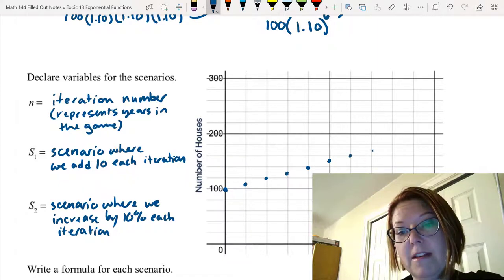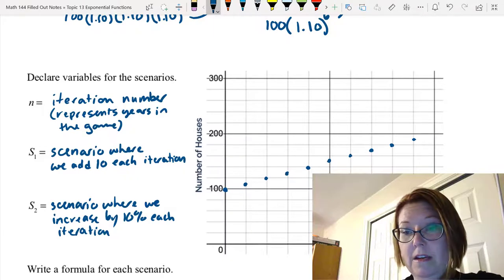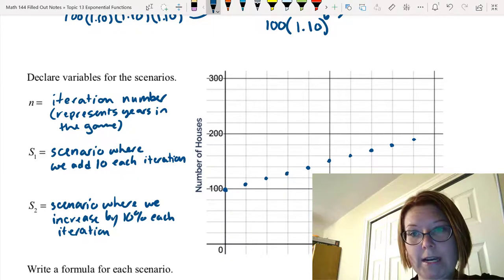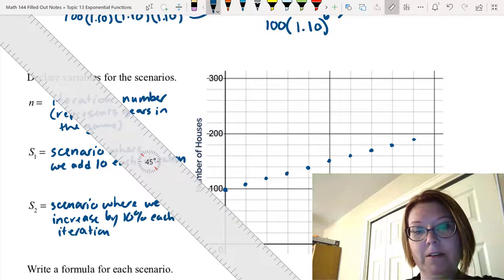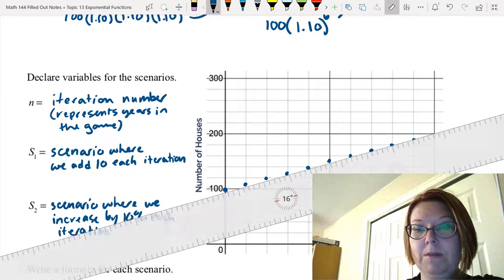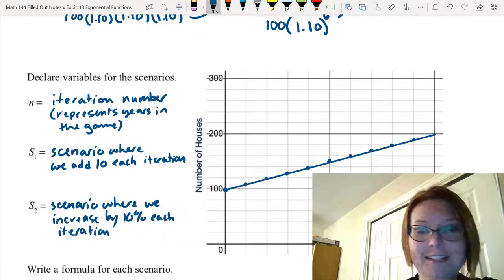I'm just going to keep climbing at exactly the same rate until I get to iteration 8. You can see that's a nice straight line. I'm going to grab my ruler and graph a line between those. And this is scenario 1.